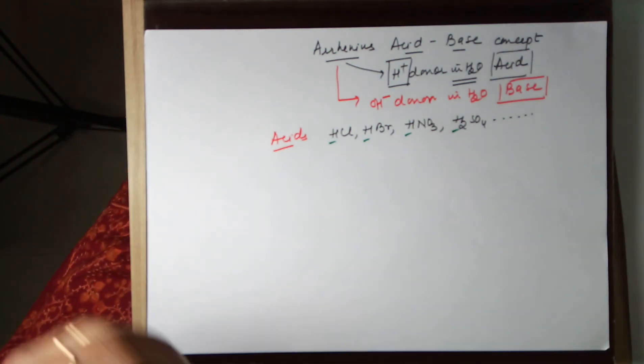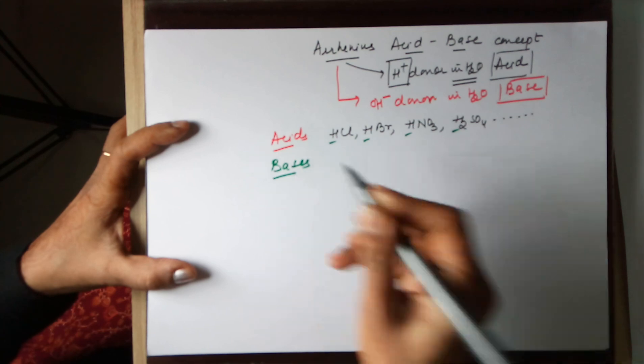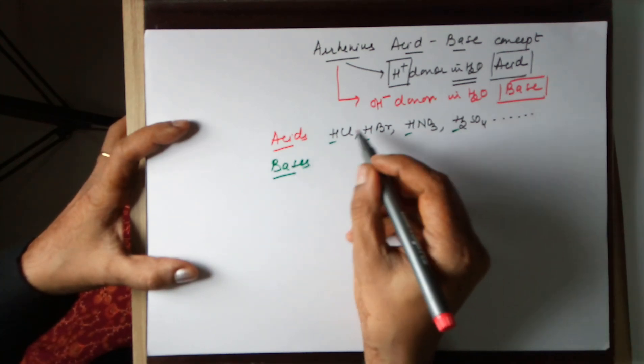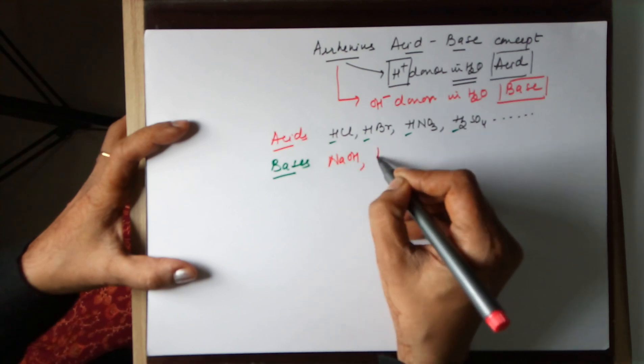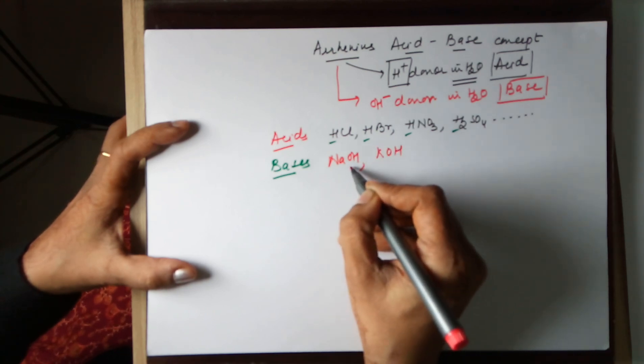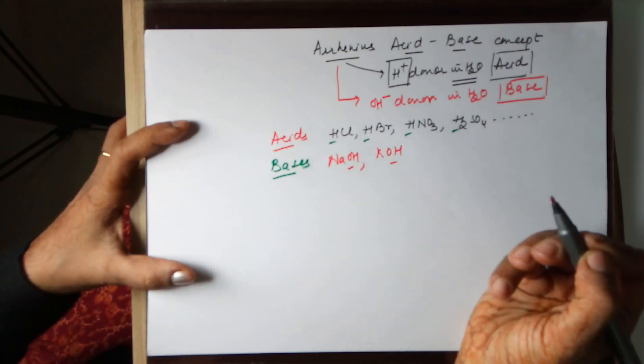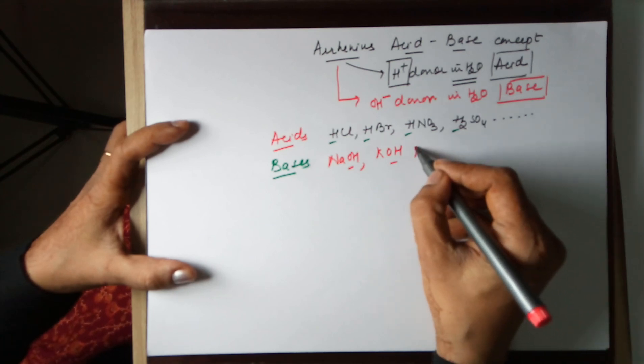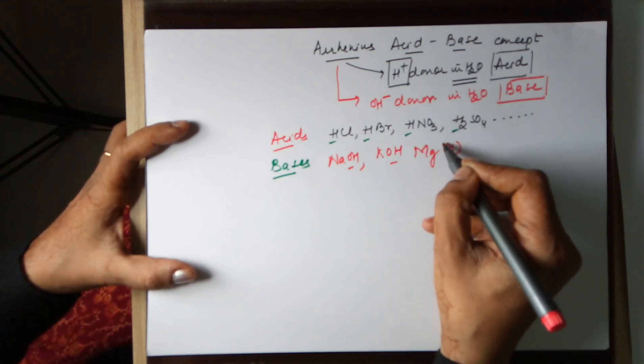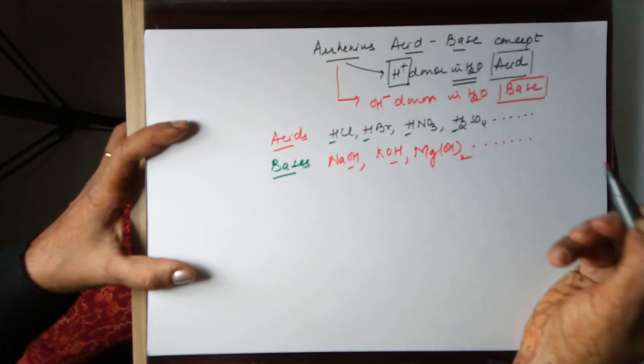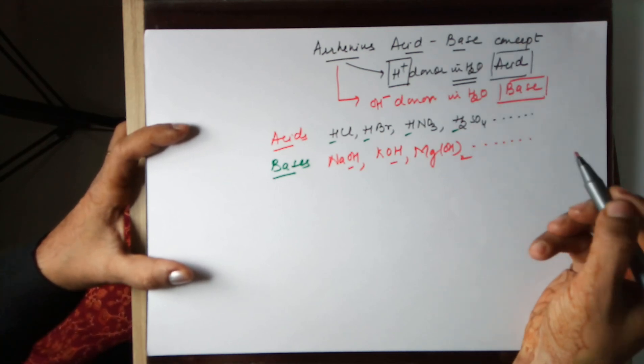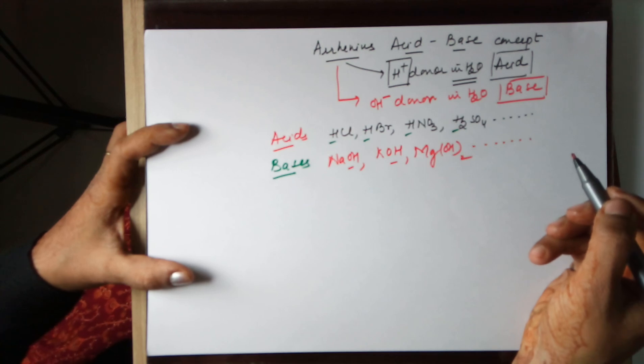On the other hand, when we talk about bases, they are entities which have to donate a hydroxyl ion. You need to have a hydroxyl ion first. NaOH can give OH, KOH can give OH, magnesium hydroxide is capable of giving two OH ions, and so on. All metal hydroxides fall under the category of bases.